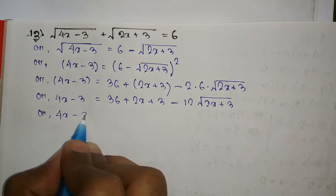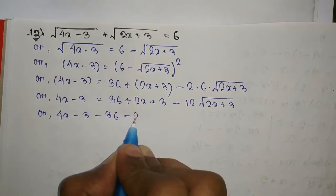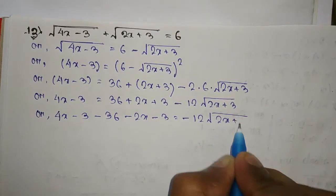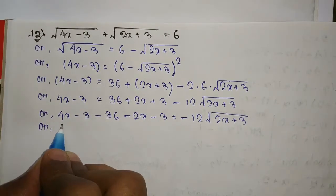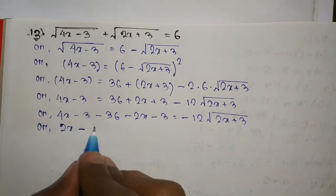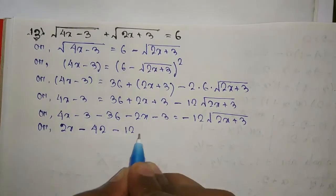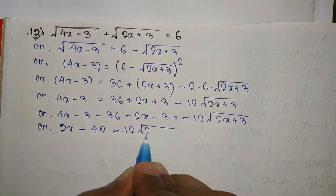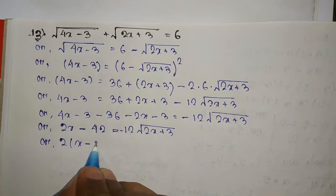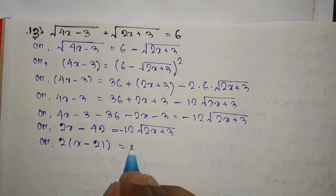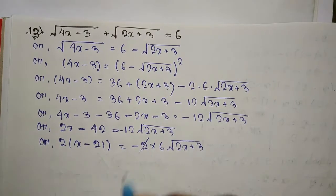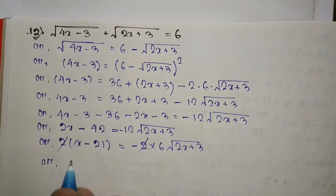Rearranging: 4x minus 3 minus 36 minus 2x minus 3 equal to minus 12√(2x + 3). Simplifying: 2x minus 42 equals minus 12√(2x + 3), so dividing by minus 2 we get x minus 21 equal to 6√(2x + 3). Now we square both sides again.